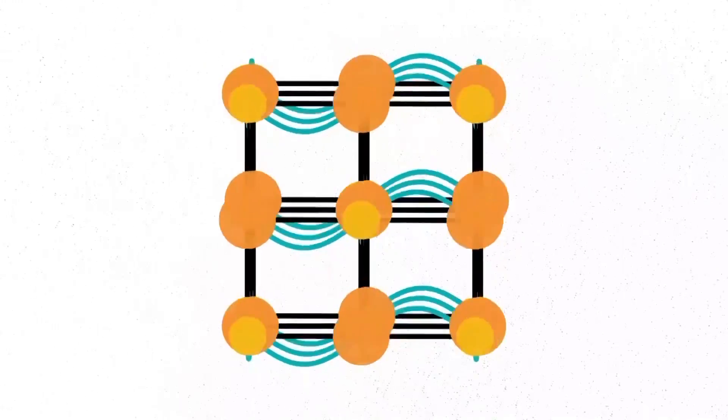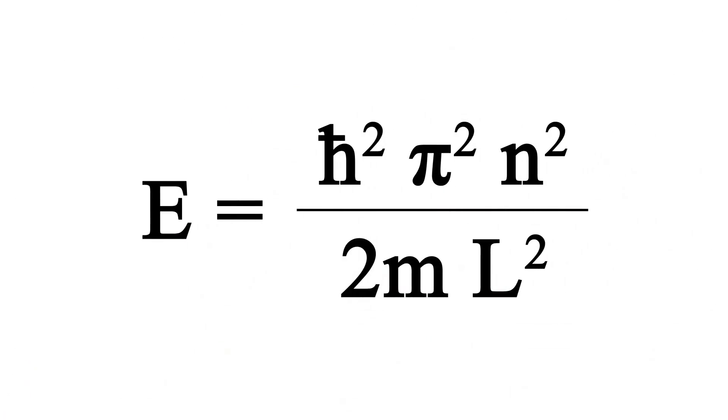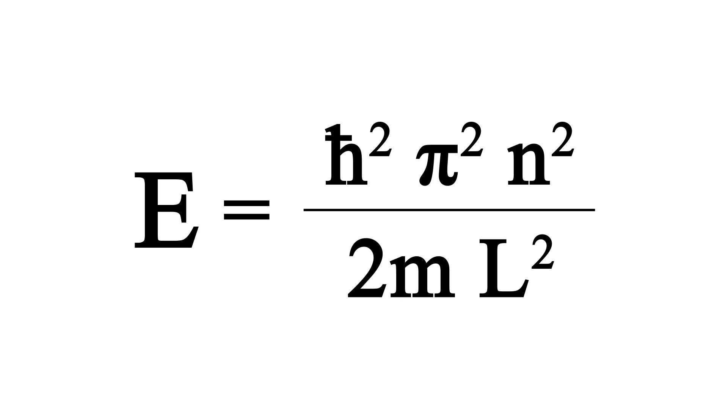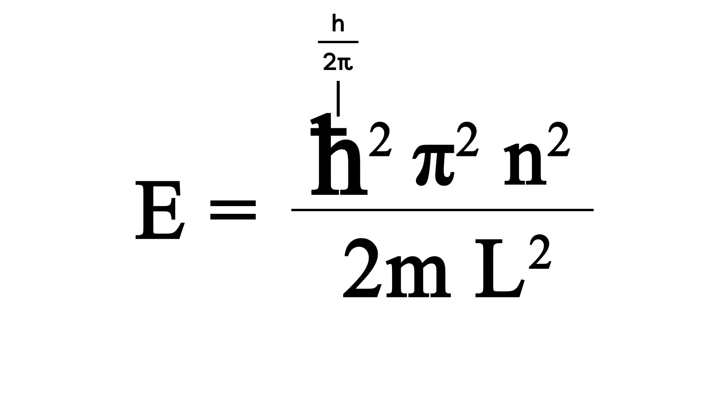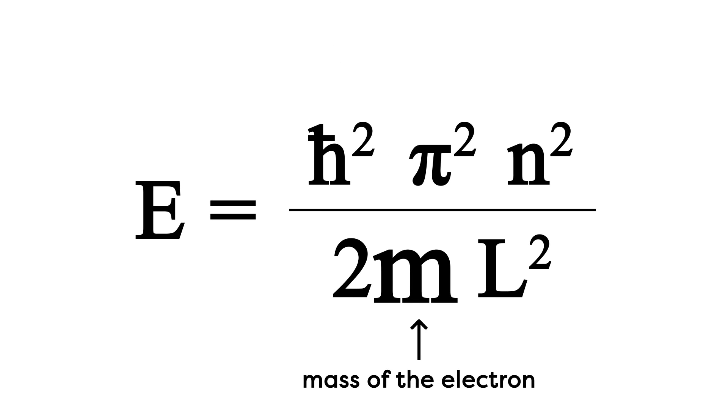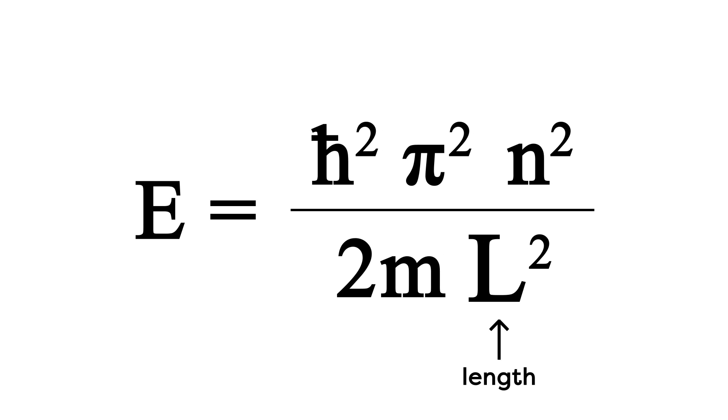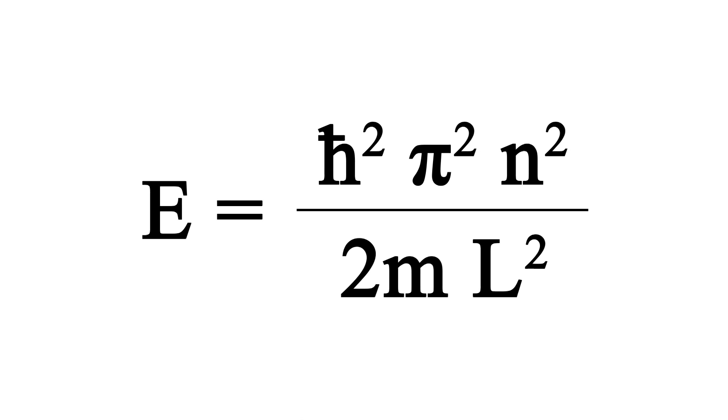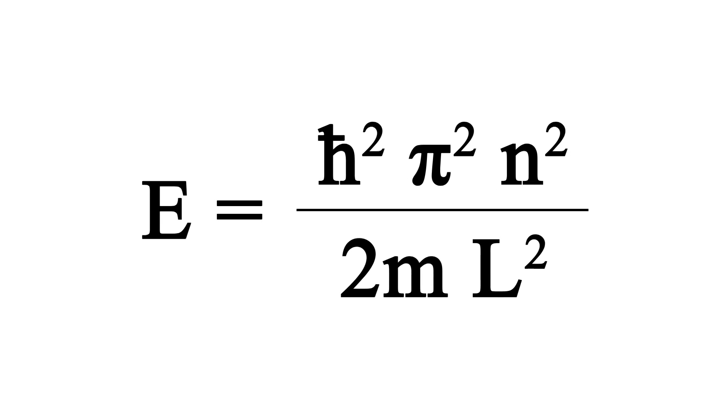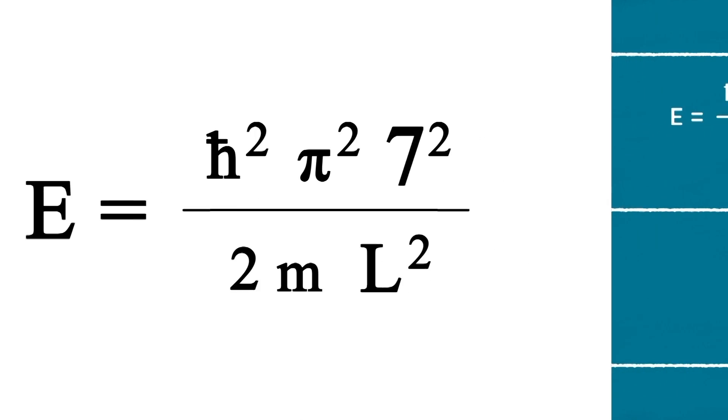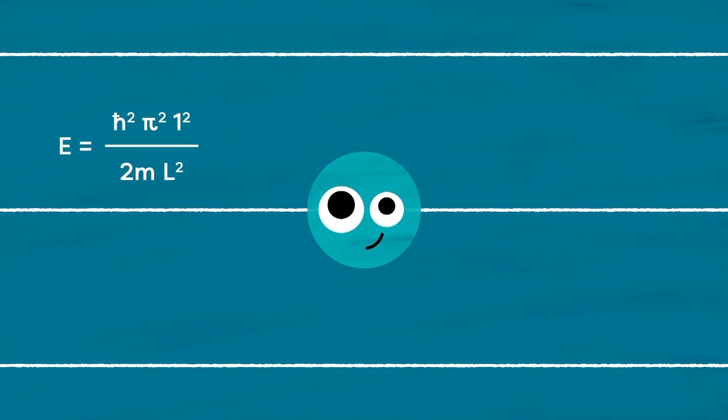And indeed, when we solve the Schrödinger equation, that's exactly what we get. This equation gives us the energy levels allowed for an electron. Notice how all the terms are constant values except one. H-bar is Planck's constant on 2π. M is the mass of the electron, which doesn't change. L is the length of the lattice spacing, which doesn't change. And π is a constant. N is the only value that changes and needs to go up in whole numbers. Therefore, if N can only increase in whole numbers and the rest of the values are fixed, the energy levels must also increase in discrete chunks.